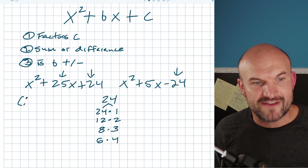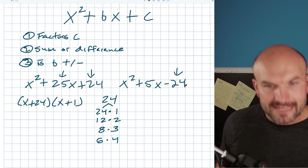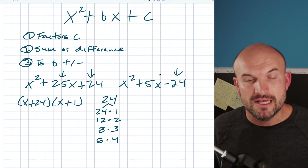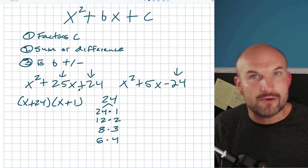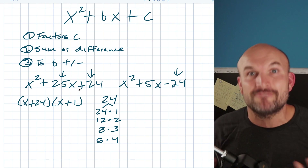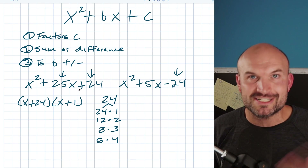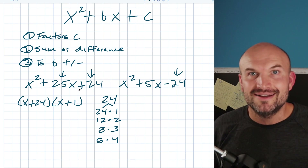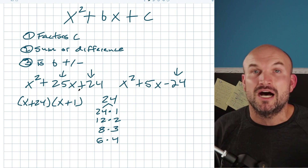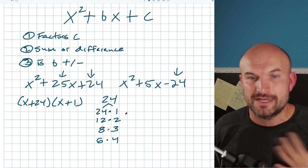So we can quickly factor this as (x + 24)(x + 1). Now in the next example the last term is negative, so we're looking for the difference. Looking at the factors: it's not going to be 24 and 1 because the difference of 24 and 1 is 23 — those are really far apart. I want factors with a difference of 5, and that's going to be 8 and 3.